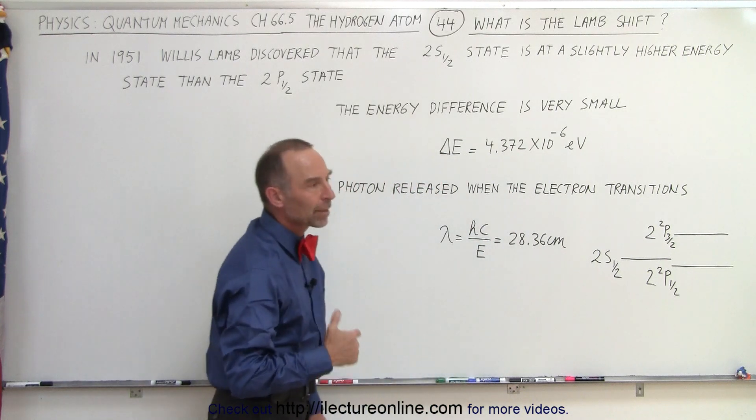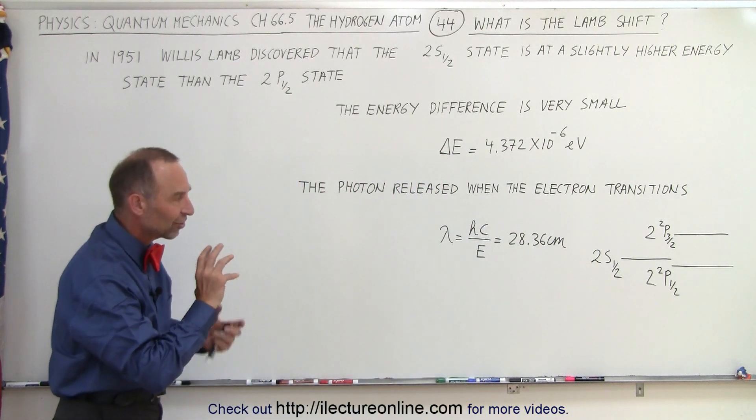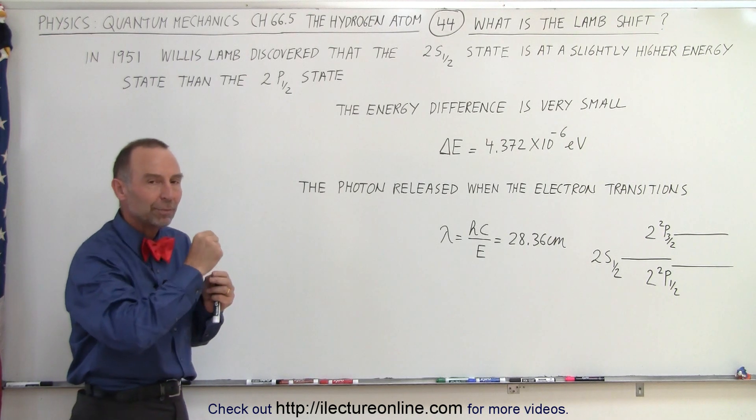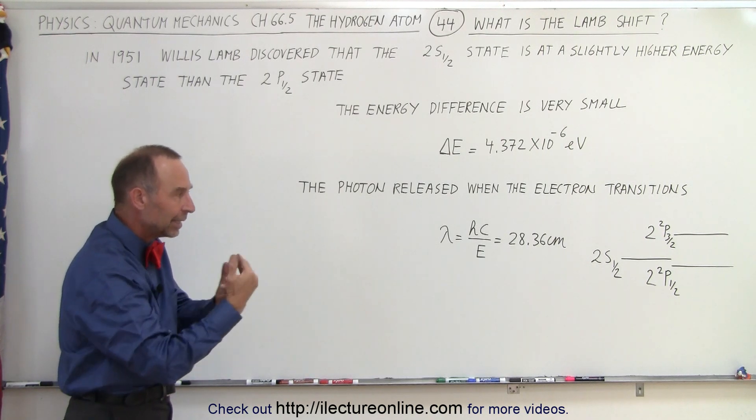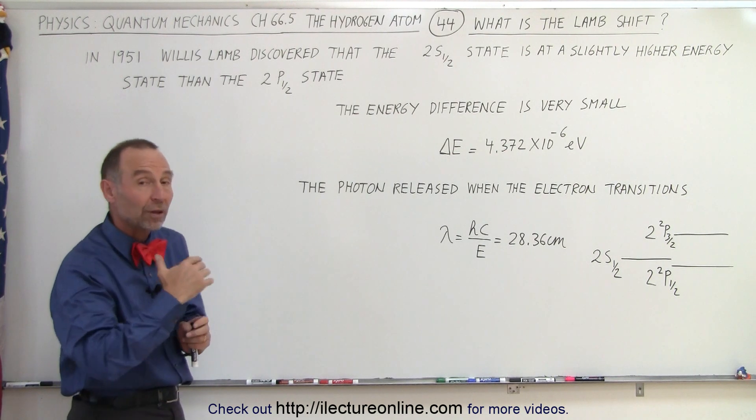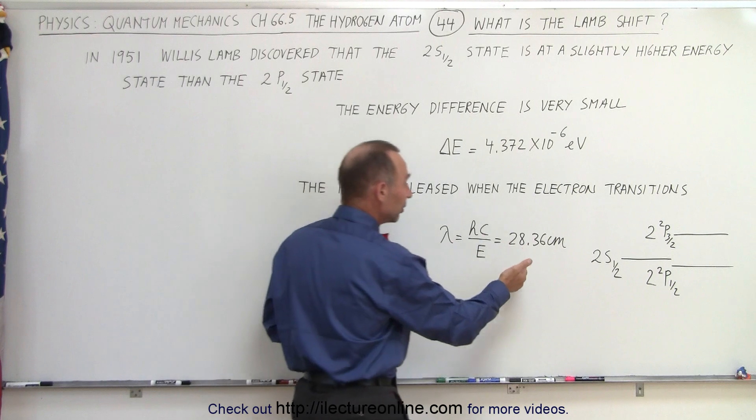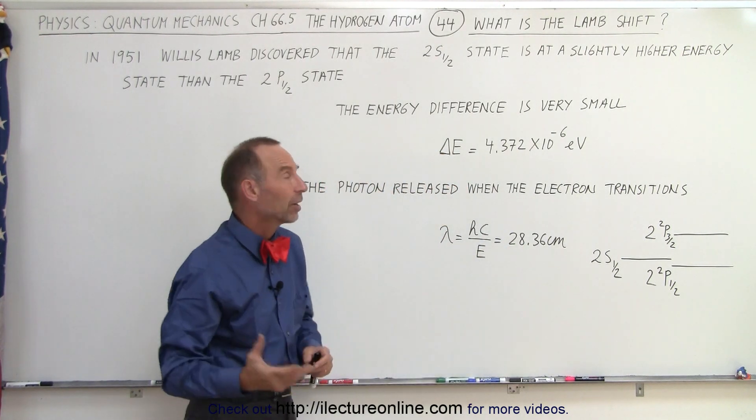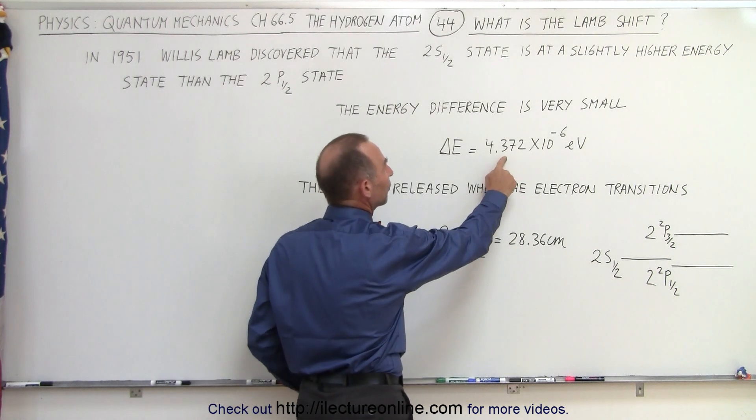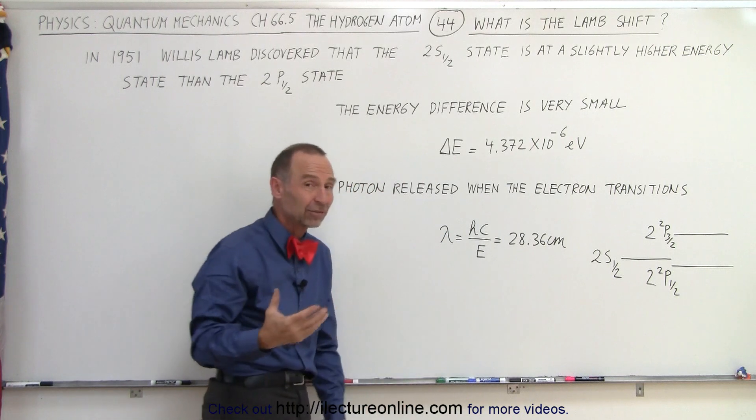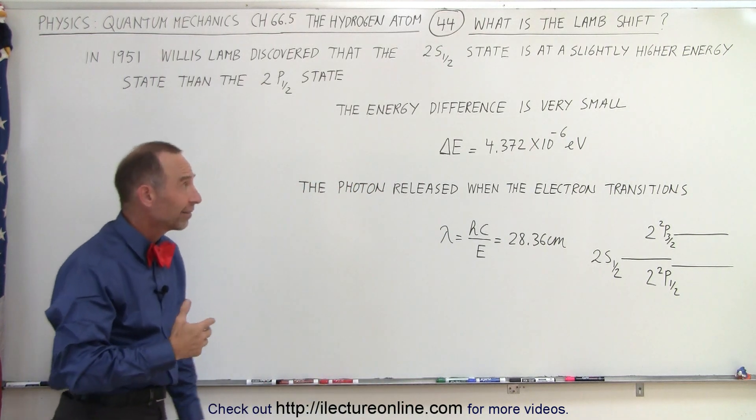There appears to be a slight difference in the interaction between the electron in the 2s state and the electron in the 2p state with the nucleus of the atom. When the electron transitions between one and the other, there's a wavelength that can be seen. It's actually a very long wavelength because there's a very small energy difference. Notice it's 4.37 times 10 to the minus 6 electron volts.